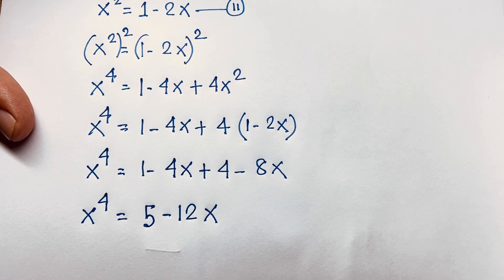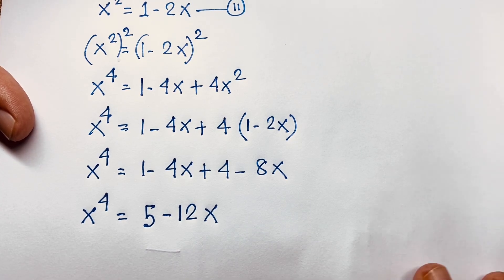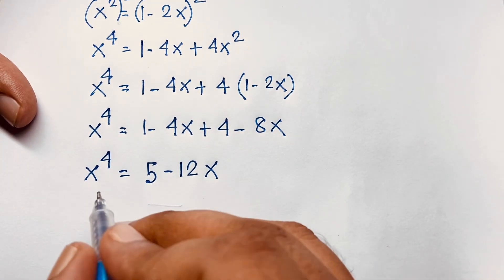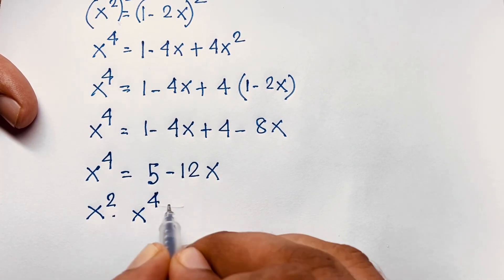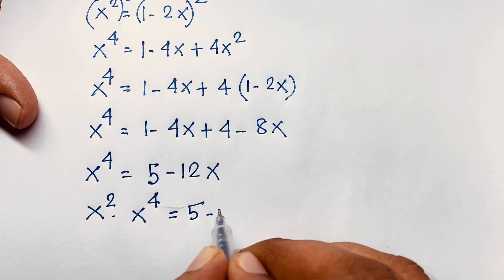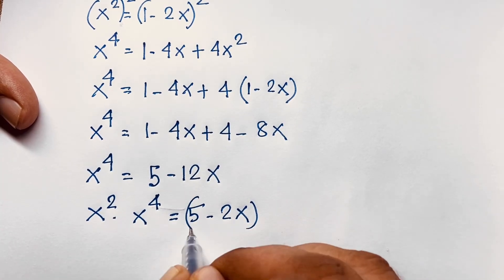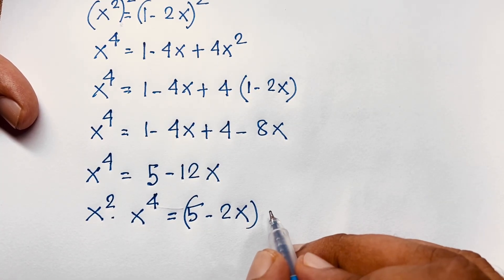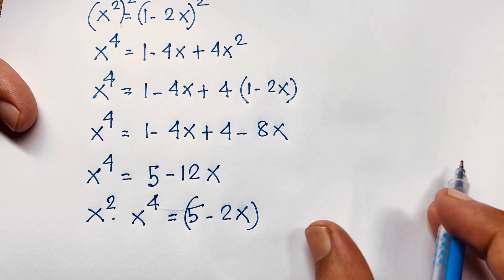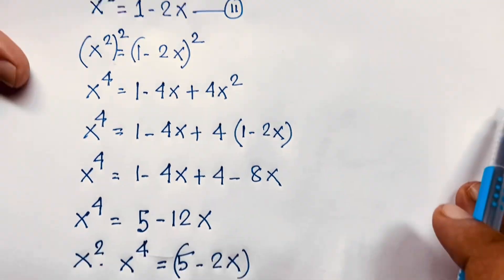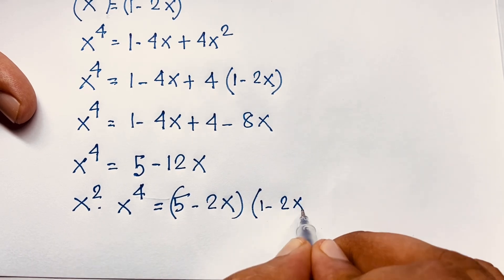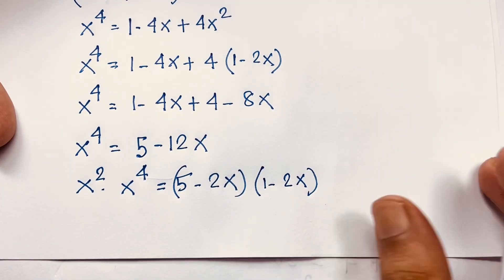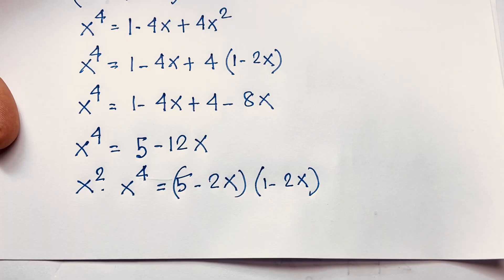Our target is x^6. To get x^6, I multiply both sides of x^4 equals 5 minus 12x by x². Here x² equals 1 minus 2x, so I write x^4 times x² equals (5 minus 12x) times (1 minus 2x).